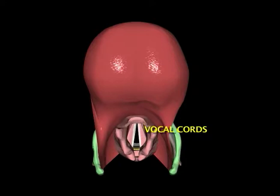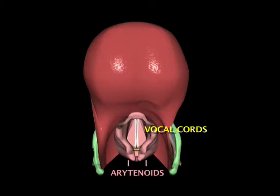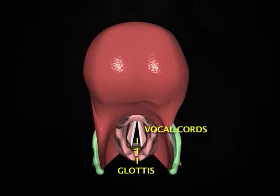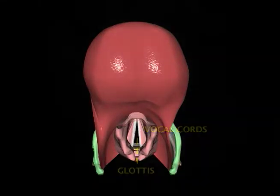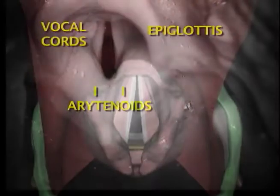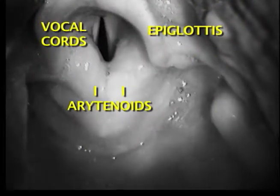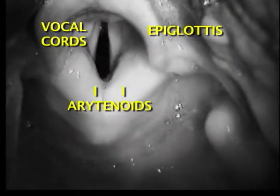The vocal cords are ligaments that project forward from the arytenoid cartilages to the inside of the thyroid cartilage. The opening to the trachea, called the glottis, lies between them. All the cartilages, ligaments, and muscles are covered by mucosa.